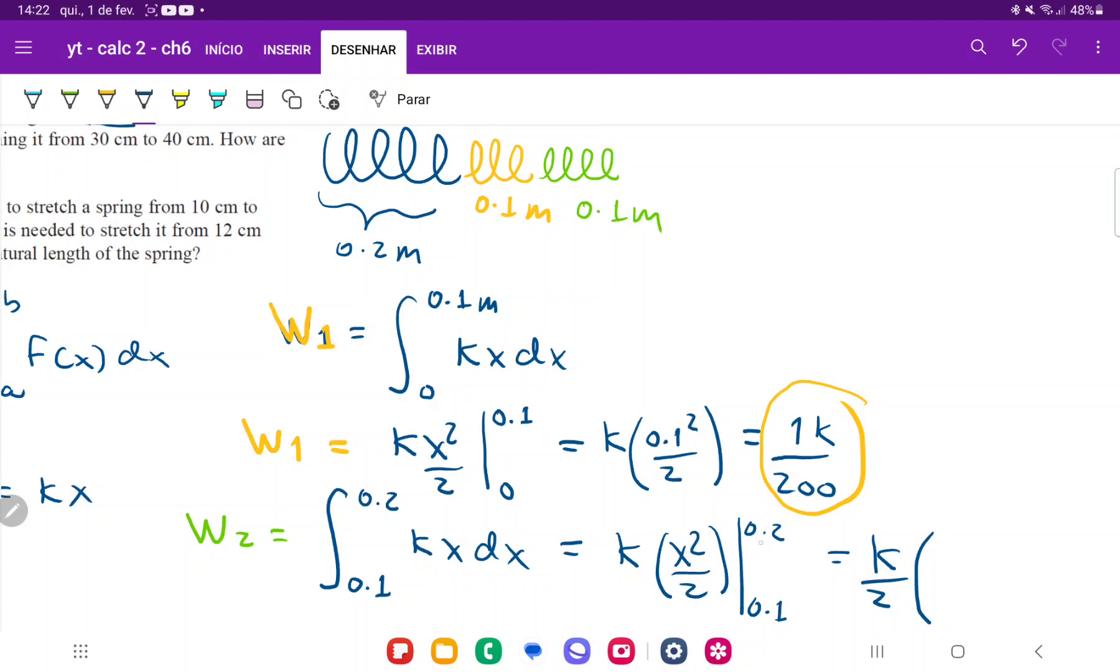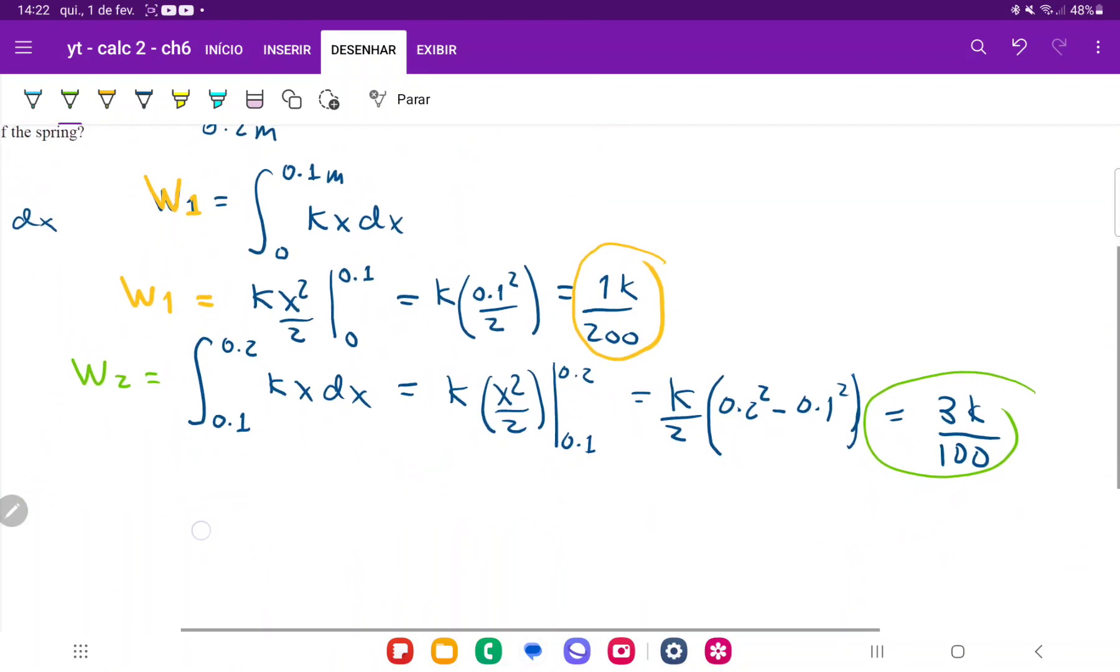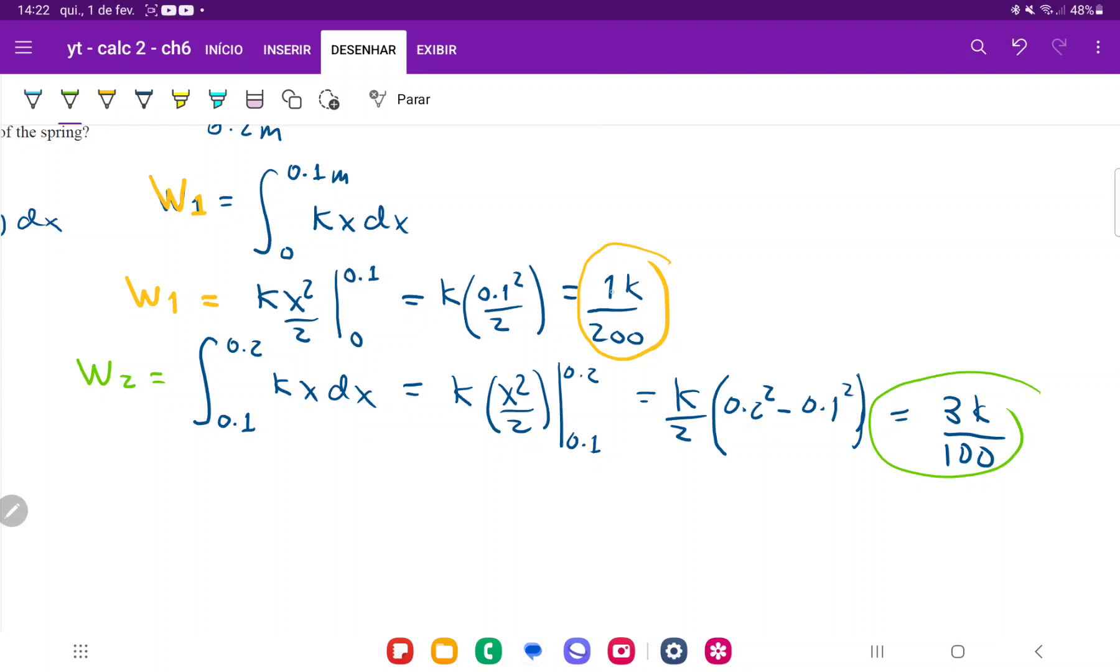That's k over 2 times the upper boundary (0.2 squared) minus the lower boundary (0.1 squared). If we calculate this—0.2 squared minus 0.1 squared all divided by 2—we get 3k over 200.